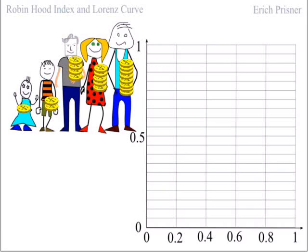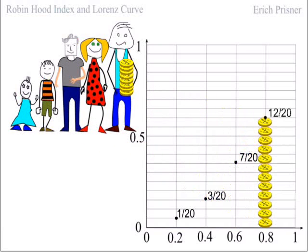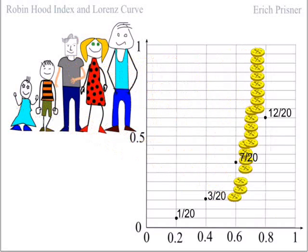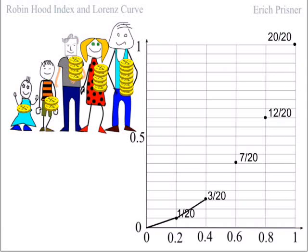The poorest fifth, Anne, owns 1 over 20 of the total wealth. The poorest two fifths own 3 over 20 of the total wealth. The poorest three fifths own 7 over 20 of the total wealth. The poorest four fifths own 12 over 20 of the total wealth. And the whole population of course owns 20 over 20 of the total wealth. Then we connect these points by straight lines.